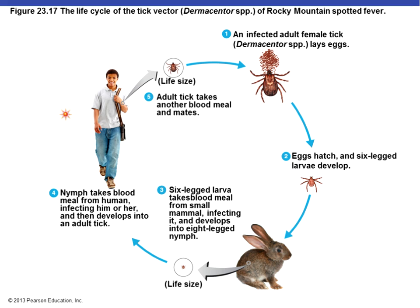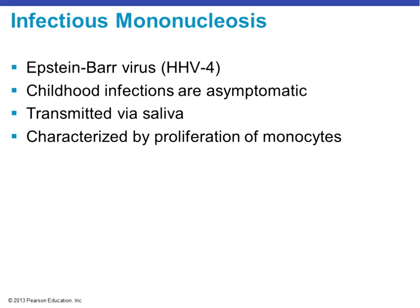The life cycle of Rocky Mountain spotted fever: the infected adult tick lays eggs that hatch; they take a blood meal from a small animal and become infected, developing into a nymph. The nymph then takes a blood meal from a human, infecting them, and develops into an adult tick.